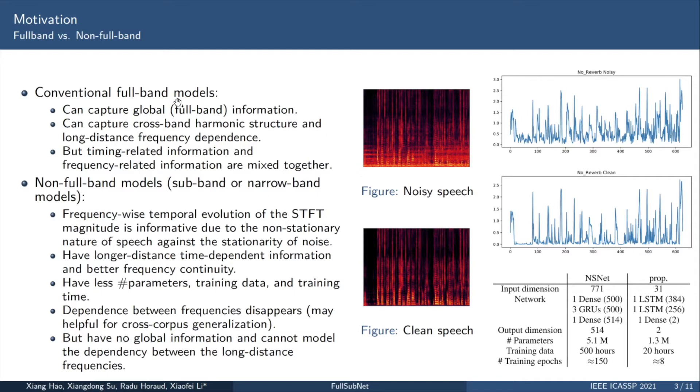Theoretically, the full-band model can obtain all the information on the spectrogram. It can easily obtain the cross-band harmonic structure and the long-distance frequency dependencies. This is very useful under low SNR. For example, in the middle of the screen, this is a spectrogram of a noisy speech, and this is a spectrogram of a clean speech. The noisy speech contains some non-stationary noise which is mainly concentrated in the low-frequency region.